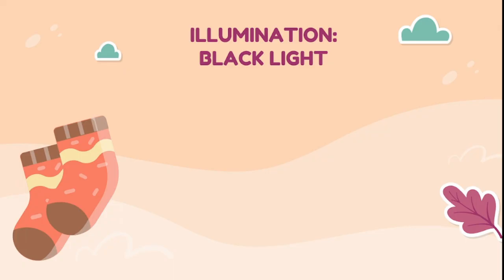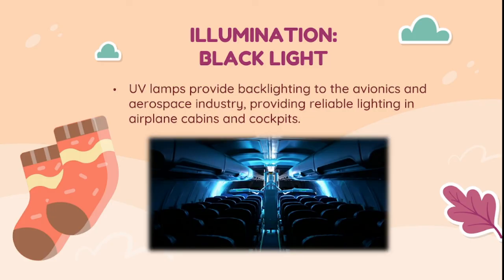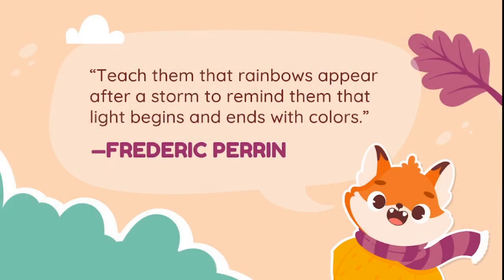Ultraviolet is also used in illumination using black lights. UV lamps provide backlighting to the avionics and aerospace industry, providing reliable lighting in airplane cabins and cockpits. These are the applications of visible light and ultraviolet. If you have more ideas to share about this topic, please comment down in our comment section. Before we end, let me share this quote from Frederick Perrin: 'Teach them that the rainbows appear after a storm to remind them that light begins and ends with colors.'